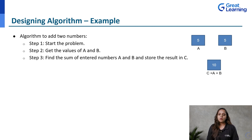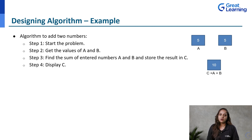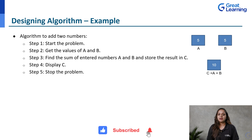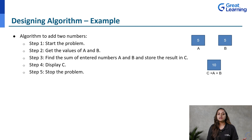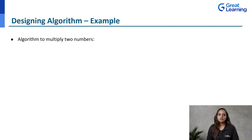After storing the result, we have to display it. The next step is to display the value in location C. Then we have to stop the problem — you must also stop after displaying the result. These are the steps involved in the addition of two numbers. Next, we will also write the algorithm to multiply two numbers, which is very similar to the addition example we already learned.